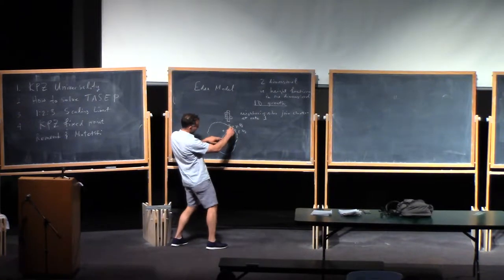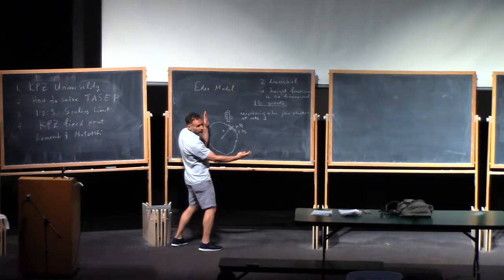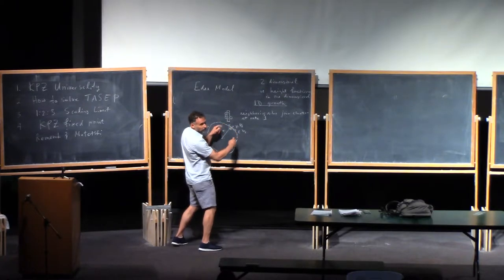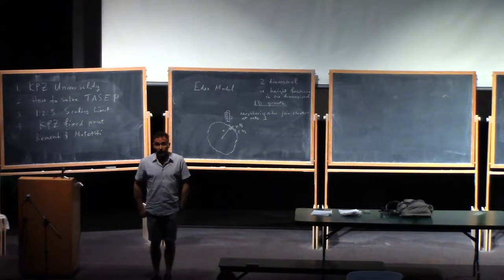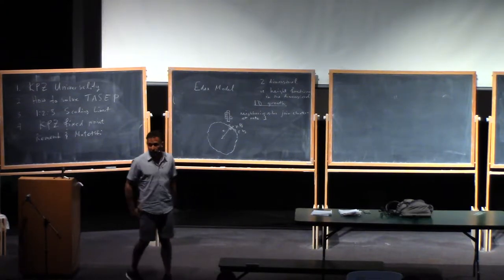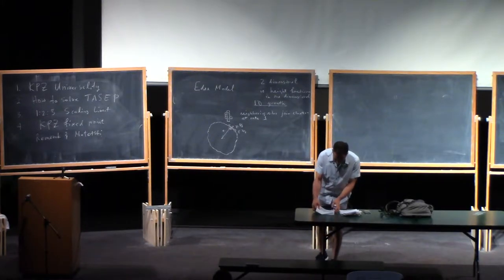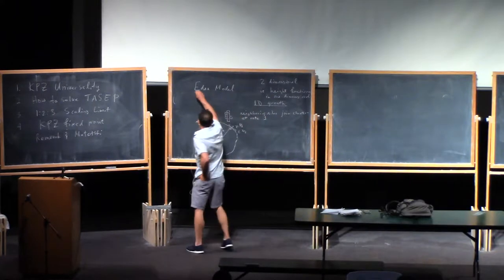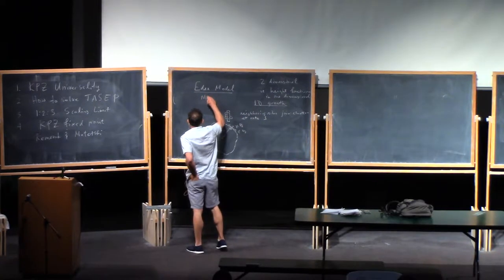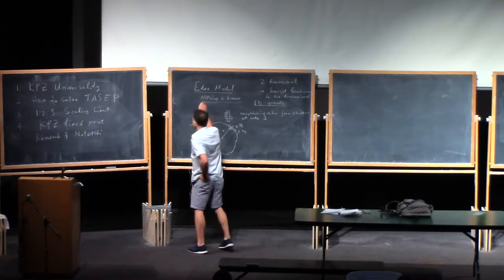The cluster has a radius around T. You'll see fluctuations of size T to the one-third, but on a spatial scale of T to the two-thirds. There are these universal processes called Airy processes, which govern these fluctuations. Some of them occur in random matrix theory. For this model, nothing is known — there's no result whatsoever.